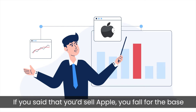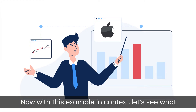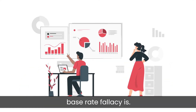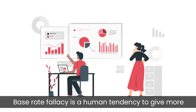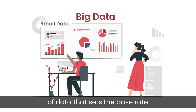If you said that you would sell Apple, you fall for the Base Rate Fallacy. Now, with that example in context, let's see what Base Rate Fallacy is. Base Rate Fallacy is a human tendency to give more importance to particularly small data over a large set of data that sets the base rate.